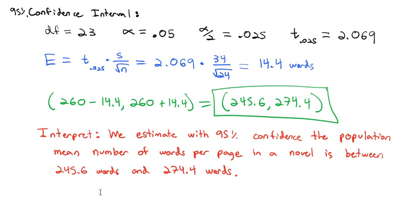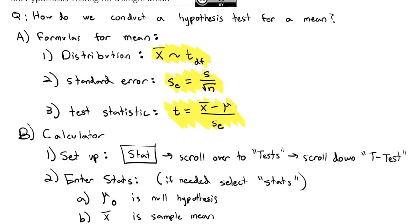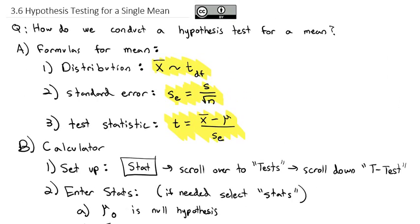Hypothesis testing with a mean should feel very similar to hypothesis testing with a proportion because the process of a hypothesis test is identical regardless of what we're studying. Means are nice because we can use the calculator to make things a little shorter and quicker, but the philosophy behind the hypothesis test is still exactly the same. We'll look forward to trying a few of these in class and answering any questions you might have.